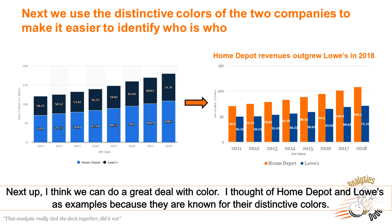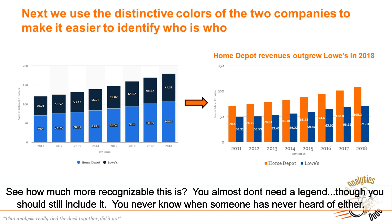Next up, I think we can do a great deal with color. I thought of Home Depot and Lowe's as examples because they're known for their distinctive colors. See how much more recognizable this one is? You don't even need a legend that says which is which, though you should still include it — you never know when it's being shown to someone who has never heard of either of these companies.